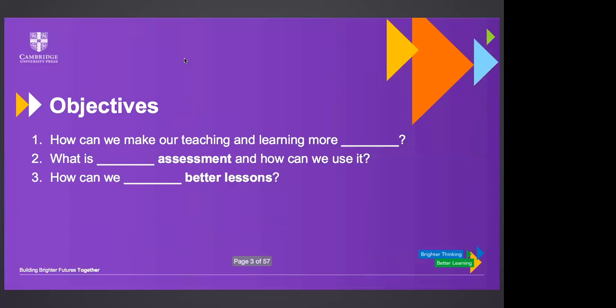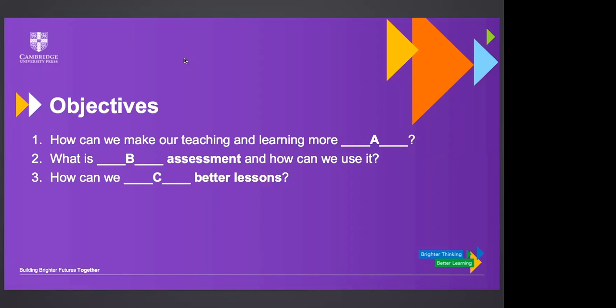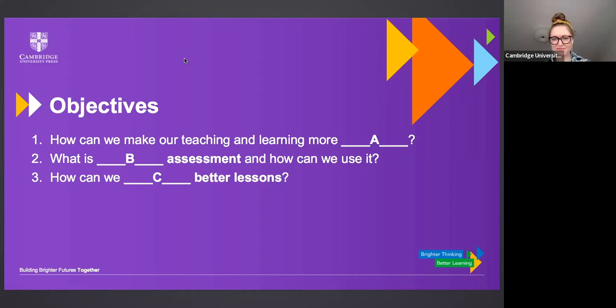We're going to begin with a fairly active way of just getting warmed up. We have an hour together, but we want to make sure there's enough time at the end for questions. I also want to make sure there are opportunities for you to give feedback. Just to make sure that your expectations of the session today align with mine, I want to play a quick game: guess the objectives. We have three here — this is ideally what we're going to cover in the next 40 minutes before our questions.